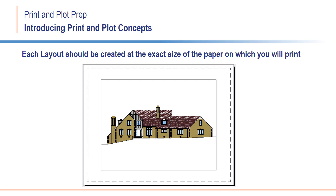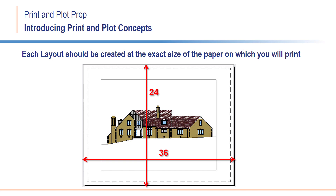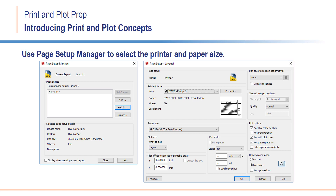Each layout should be created at the exact size of the piece of paper on which you will print. In other words, if you plan to print the drawing on a D-sized sheet of paper, or an A1 sheet if you are using metric, you would create a layout that measures 24 by 36 inches, or 594 millimeters by 841 millimeters. You do this by using the Page Setup Manager to select both the printer that will be used and the paper size.